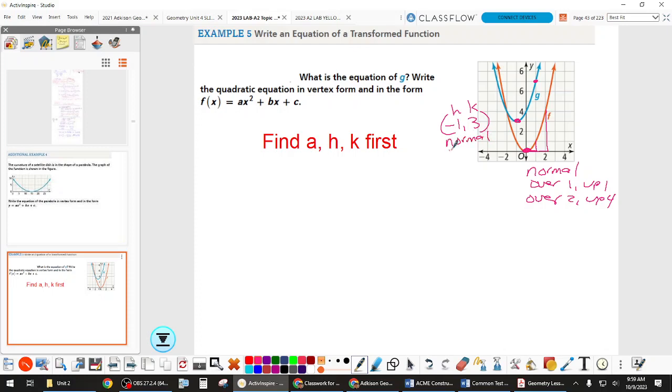Our new vertex is at negative 1, 3, so we know those are H and K, and then our graphing pattern from there, over 1, up 1, over 2, up 1, 2, 3, 4, so it's also normal. I'm going to write it as normal A value.